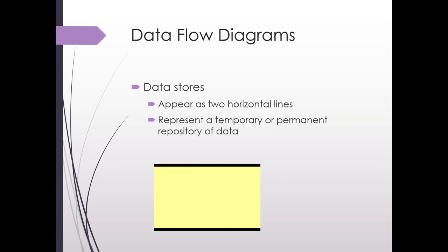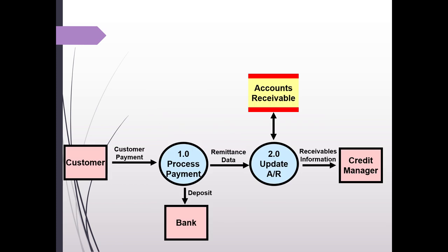And finally, we have the data stores. These appear as two horizontal lines. It is shaded for the purposes so you can see it on these slides. It's basically a repository of the data, whether it's permanent or temporary. So in the case of our customer payment data flow diagram, we have the accounts receivable. We need to be able to read in what a customer's current balance is. And then based on the processing of the payment, we would need to adjust that balance and write that balance back out to the storage.